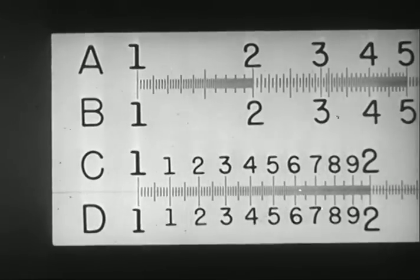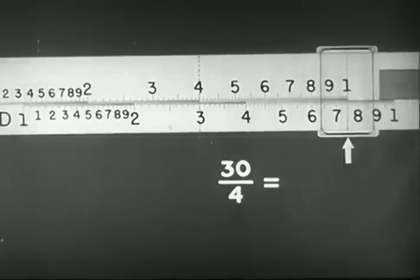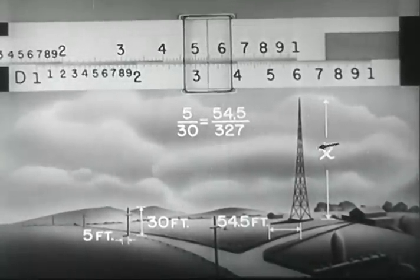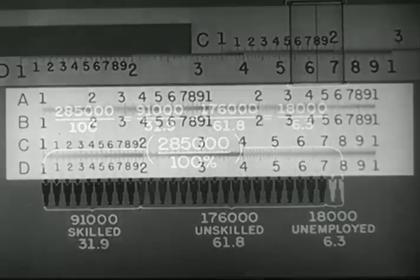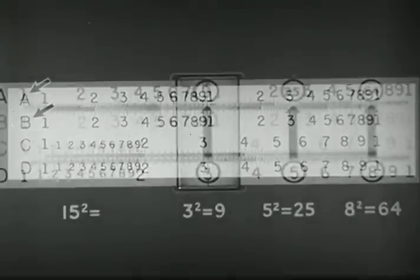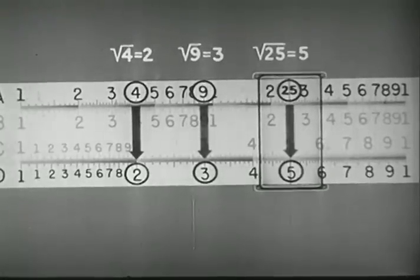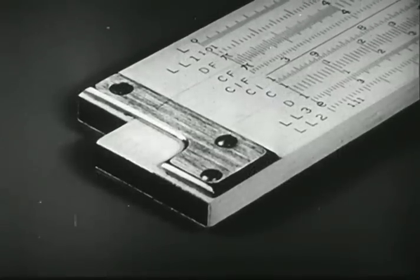Careful practice is essential to using the slide rule with speed and accuracy. Facility with the C and D scales makes possible the ready solution of problems in multiplication, division, proportion, and percentage. Using the A and B scales together with the C and D scales, it is possible to obtain quickly both squares and square roots. And these are only a few of the wide variety of problems that can be worked with the standard slide rule.